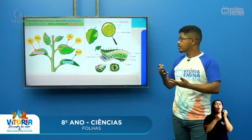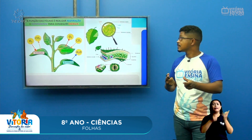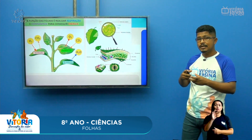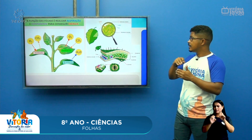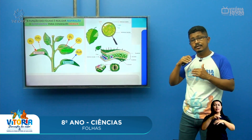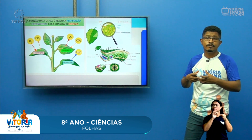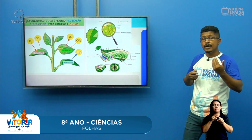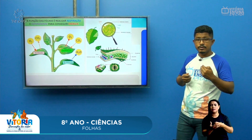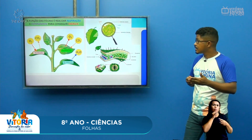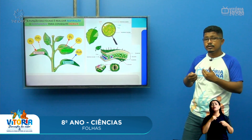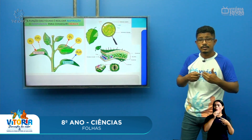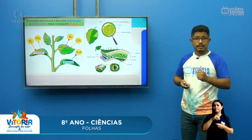As folhas transpiram por pequenas estruturas anatômicas chamadas estômatos. Os estômatos são células especializadas na epiderme da folha — na superfície da folha — que podem se abrir ou se fechar de acordo com a temperatura. Através deles ocorrem a entrada e saída dos gases, como o oxigênio e o gás carbônico, e também da água. Nos estômatos ocorre essa troca de gases e água, e dentro da célula vão ocorrer as reações químicas que realizam a fotossíntese e a respiração.